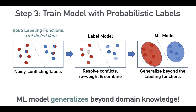This idea of generalization, and taking advantage of the larger feature set and power of ML models, is why we always need to train a downstream ML model and can't just stop with our heuristics.